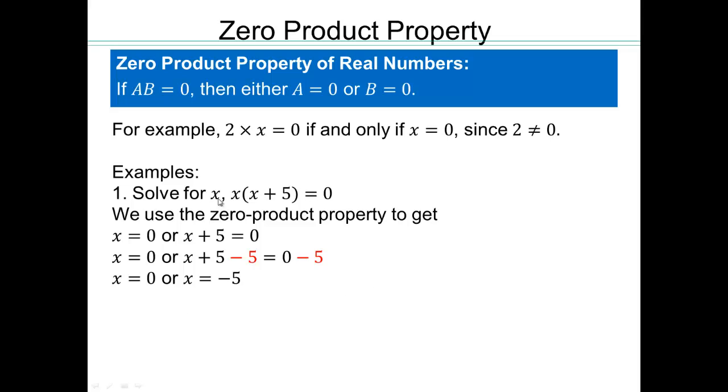And you can test it. Zero times something is zero. Negative 5 plus 5 is zero. Zero times negative 5 is zero. So both these work.